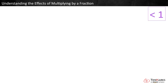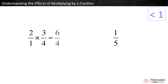Now let's look at fractions less than 1. Fractions less than 1 have a numerator smaller than their denominator — for example, 3 fourths and 1 fifth. We can see that when we multiply 2 times 3 fourths, we get 6 fourths, or 1 and a half. This is less than 2.